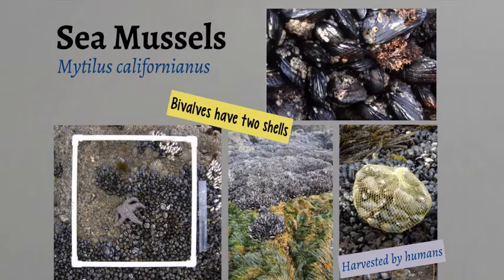Mussels are bivalve mollusks with two shells. The shells can be black and blue in color. They can form dense beds. The California sea mussel can form beds that extend from the mid-tide zone to the low-tide zone in some areas. The chief enemies of these large mussels are sea stars, but humans also harvest mussels sometimes in large quantities.